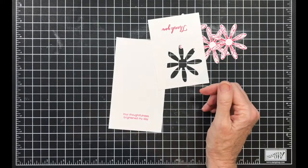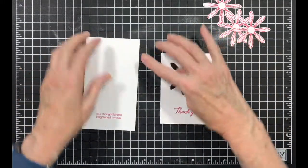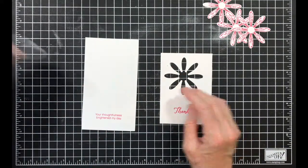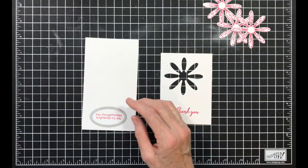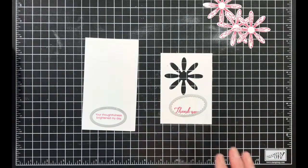Now I am going to take my... I need some scraps of melon mambo because these get cut out with this and the scallop is melon mambo. So I am going to do all of that and I shall return.